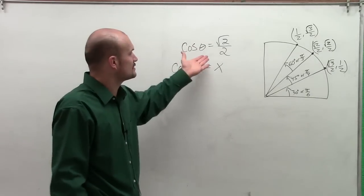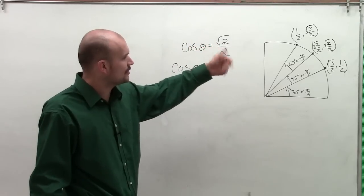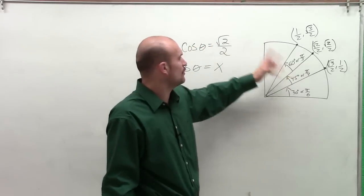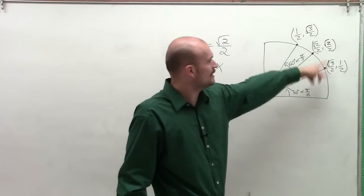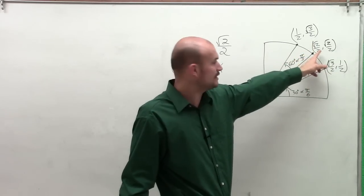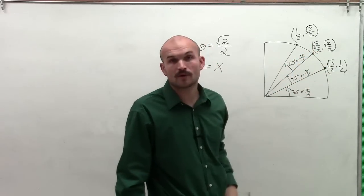So therefore, all I simply need to do is look at my unit circle and see when is my x-coordinate equal to the square root of 2 over 2. Then I can determine that angle. So I notice I have a square root of 2 over 2 here. That's for my angle at 45 degrees.